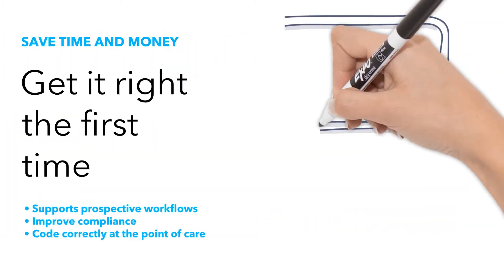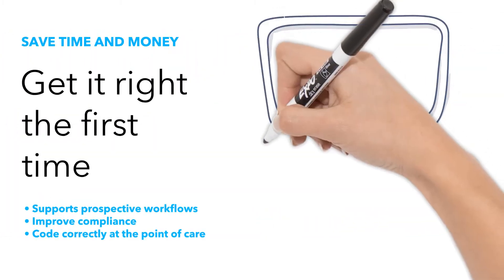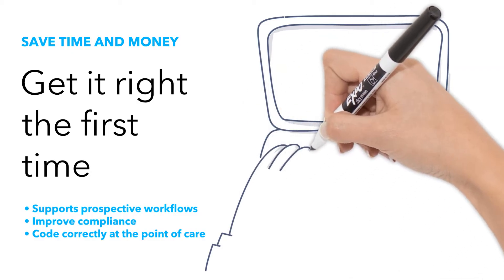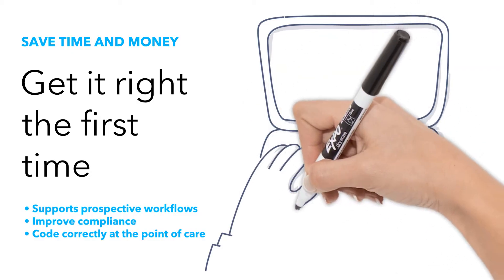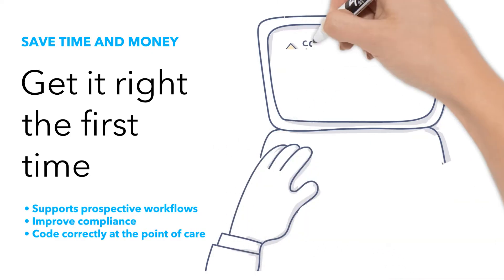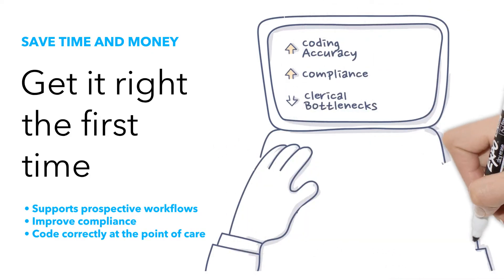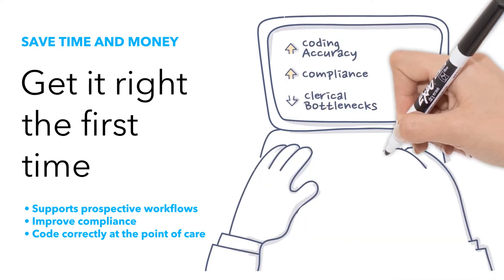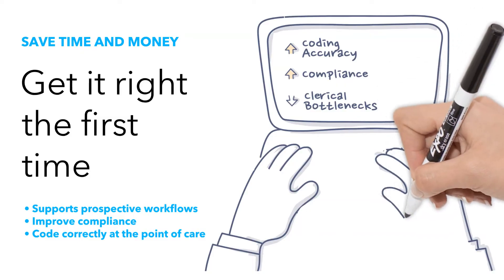Prospective decision support and retrospective review options ensure your Medicare risk adjustment coding is evidence-based and accurate. Improve your compliance, reduce work during sweep time frames, and eliminate clerical bottlenecks by coding correctly at the point of care.